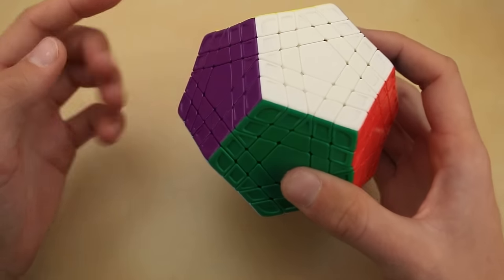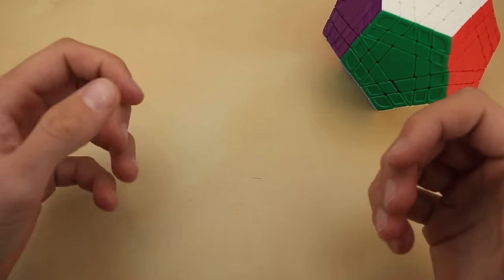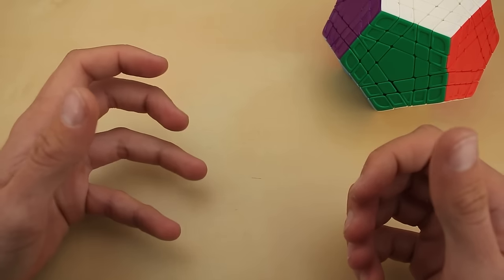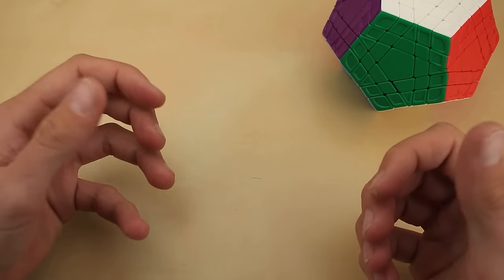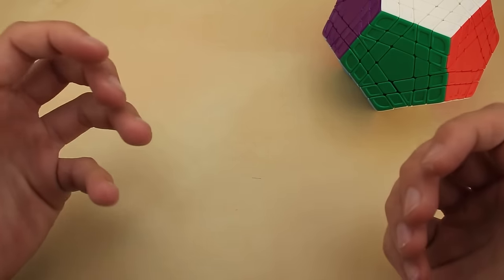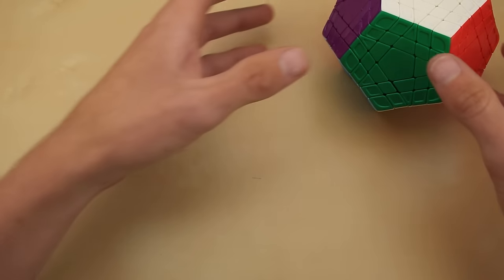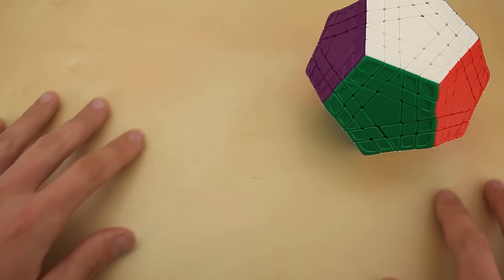As always, there'll be a link to buy the puzzle itself down in the description, and you can get 5% off anything at thecubicle.com with discount code Z3cubing. I've already mentioned the dimensions of all the magnets that I used. I believe they're all N50 or N52, and you can get them on eBay, or the cubicle probably has a few of them too. Anyway, yeah, that's pretty much it. I hope you all enjoyed, and I'll see you guys next time.